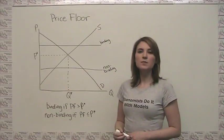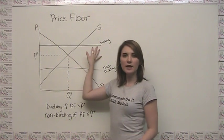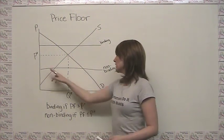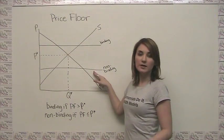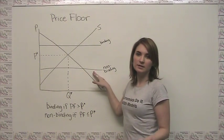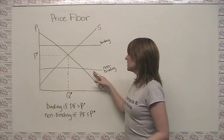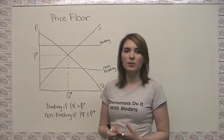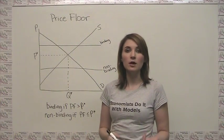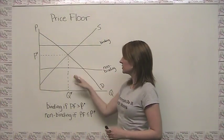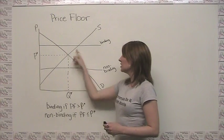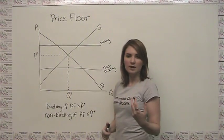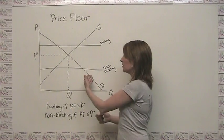We should keep in mind that a price floor that is binding today could become non-binding tomorrow, and a price floor that's non-binding today could in fact be binding tomorrow. The reason for this is that sometimes these price floors are put in as safeguards to keep the price of an item from becoming too low, and we could have changes in either supply or demand that would change this naturally occurring price.